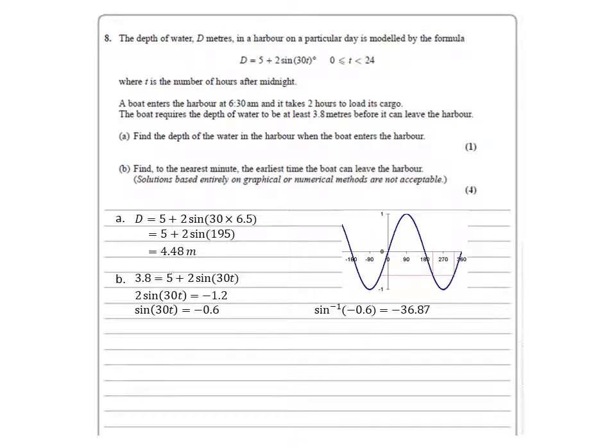So looking at our sine graph, we can see that the next answers would occur just after 180 and just before 360. And by the symmetry of the graph we can work this out by doing 180 add 36.87 to give us 216.87, and 360 minus 36.87 to give us an answer of 323.13.